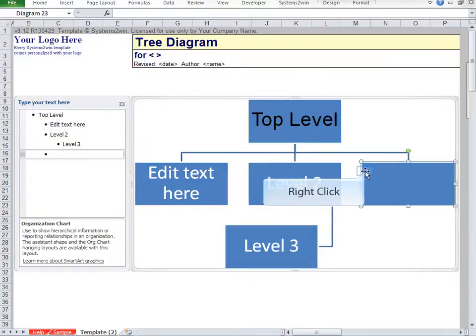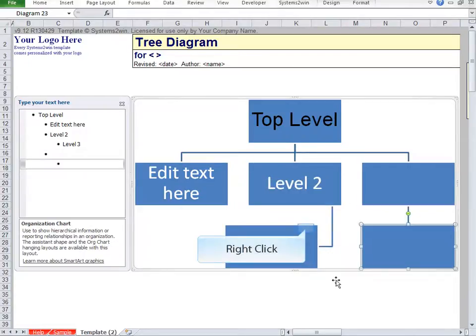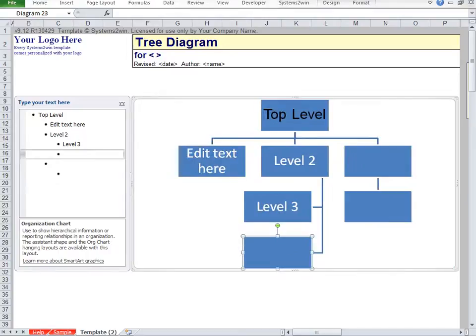To add a shape, just right-click, Add Shape. Let's do it again. Right-click, Add Shape, then choose where you want to add the shape. Pretty easy, yes?